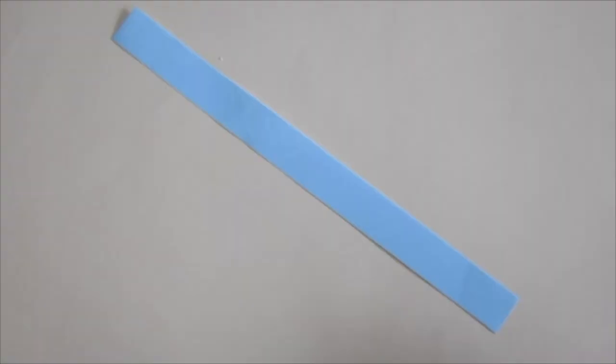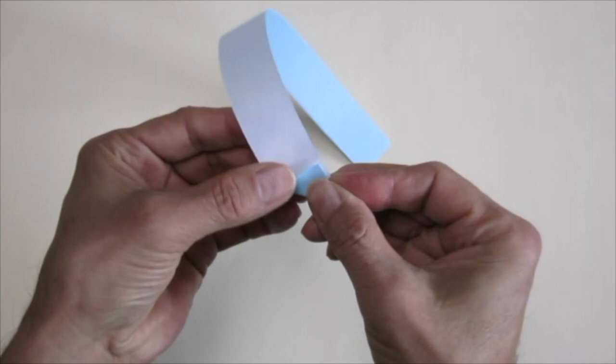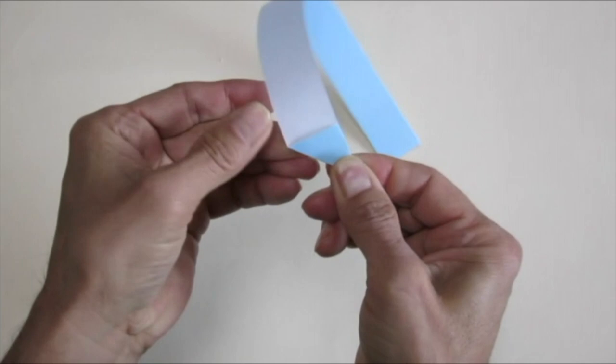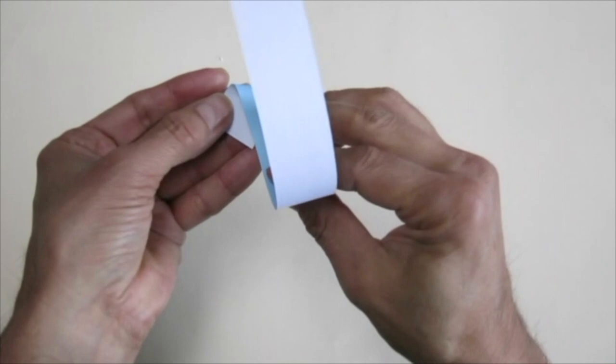First, fold a right triangle. Then you have a hypotenuse there. And then fold along the hypotenuse. You have a white right triangle.